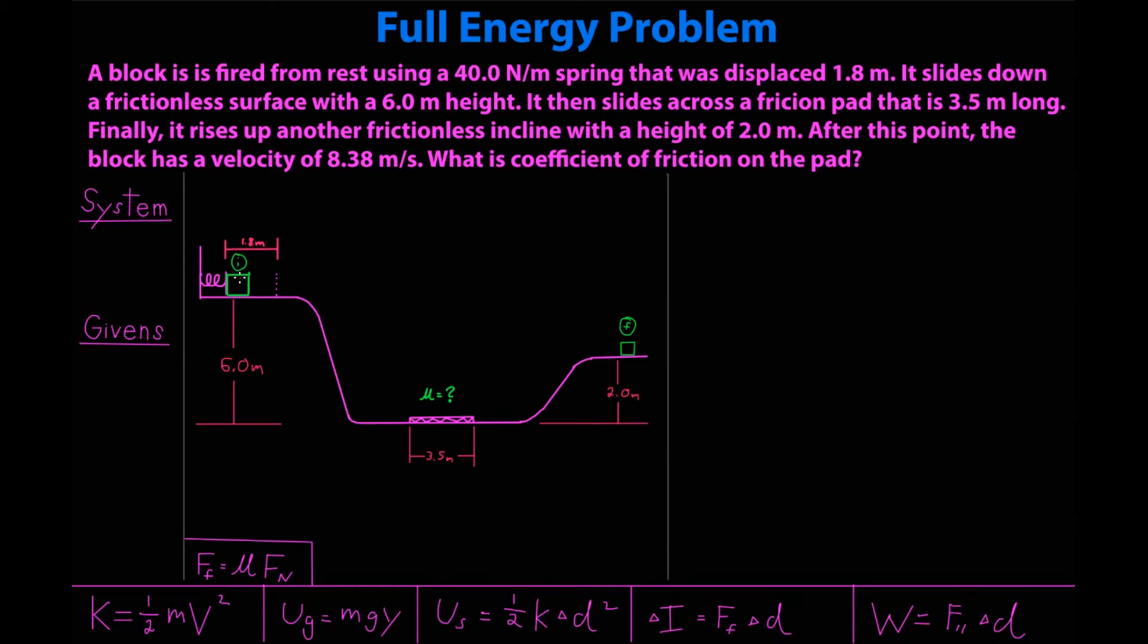Here is the block. It is already scrunched in the spring, scrunched 1.8 meters. This first hill is 6 meters high. It's going to go down this first frictionless incline. It's going to go across this friction pad, which will slow it down, then slide up this second incline. And at our final point here, we were given a velocity of 8.38 meters per second. We are after the coefficient of friction on the pad. So at some point, we are definitely going to use our force friction equation as well. So I put it here.